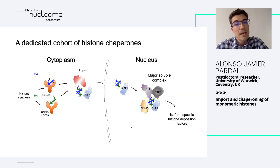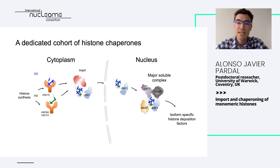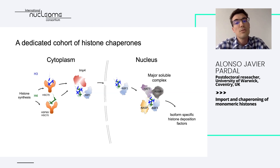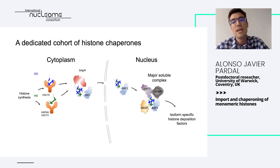Once histones are in the nucleus, a small GTP-binding protein RAN facilitates dissociation of the karyopherin cargoes and their release. Here I will introduce the first histone chaperone, ASF1 — anti-silencing factor 1 — as a key component of the H3-H4 chaperone pathway, linking the soluble histones with the chromatin deposition complexes. In addition to ASF1, I highlight HAT1, histone acetyltransferase 1, and its partner RBAP7, which interact with histone H4 and acetylate at lysines 5 and 12.